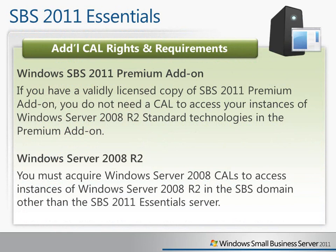Looking at Essentials specifically, there are some rights and requirements that follow from the fact that it does not use CALs. If you have a validly licensed copy of the Premium Add-on, you don't need a CAL to access the instances of Windows Server 2008 R2 Standard Technologies in the Premium Add-on — that is covered with your Essentials server license. However, if you have additional copies of Windows Server 2008 running in your SBS domain, you will need CALs to access those instances.